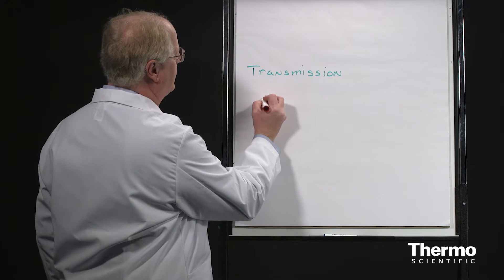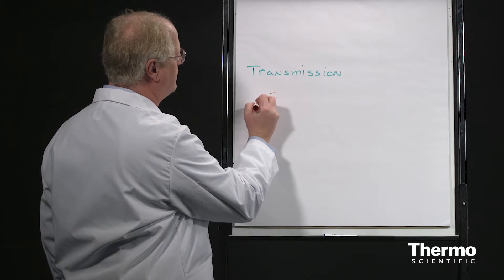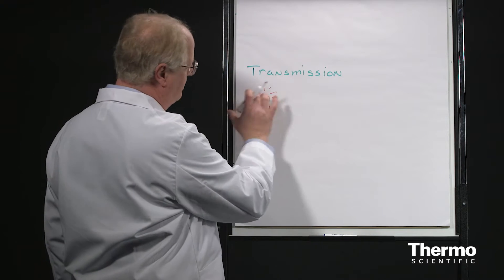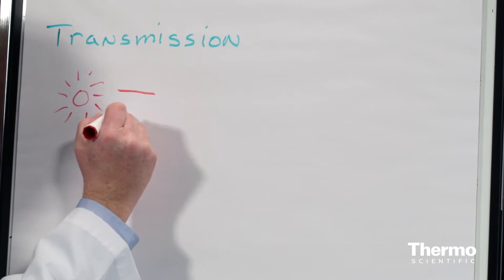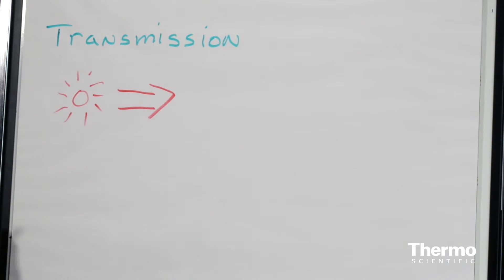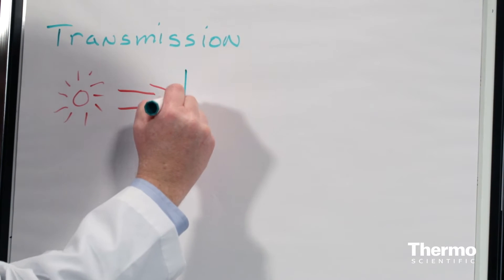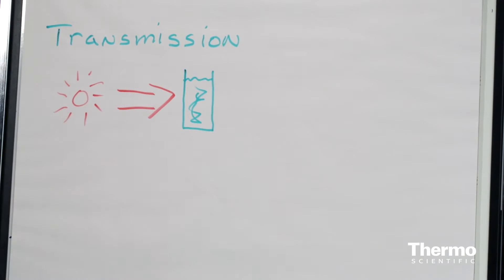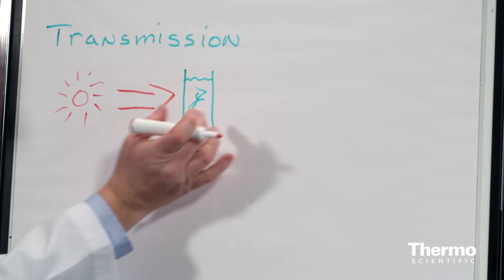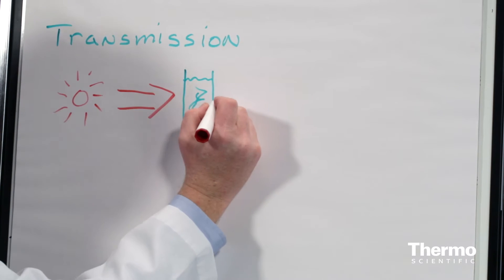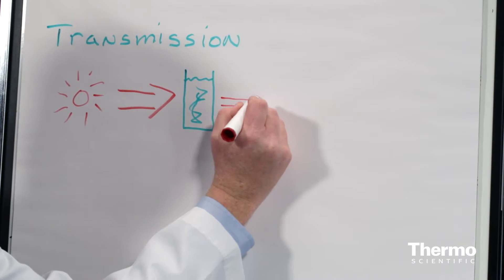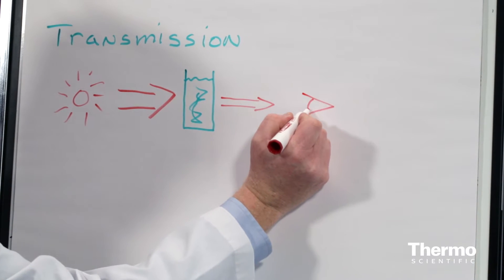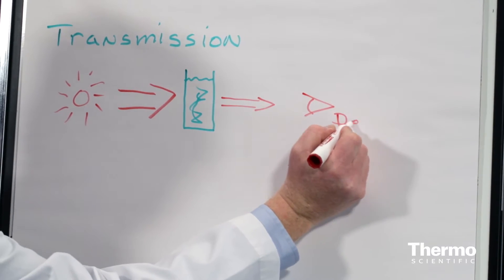In a transmission experiment, you have a source of some sort—I'll represent that as a little sun here. That would be our interferometer in the infrared, putting out light. That light goes into the sample, which I'll represent as a cuvette containing liquid. The liquid in that cuvette absorbs some of the light, so what comes out the other side is lower in intensity. Then we pick that up on a detector, which I represent here as the eye.